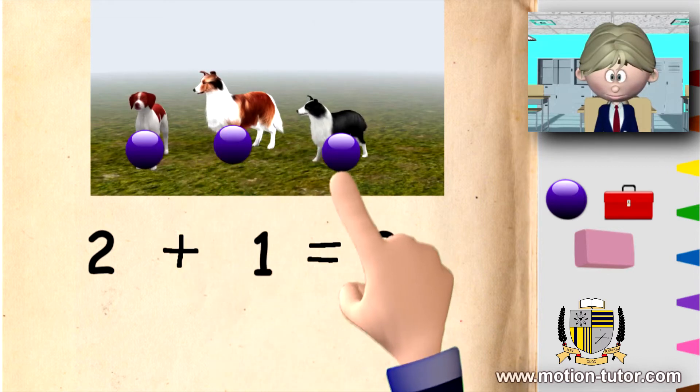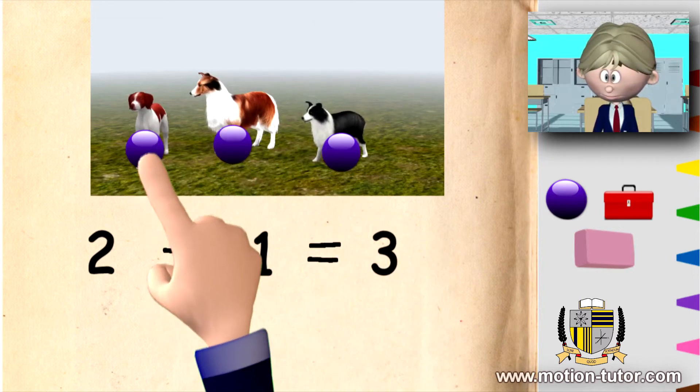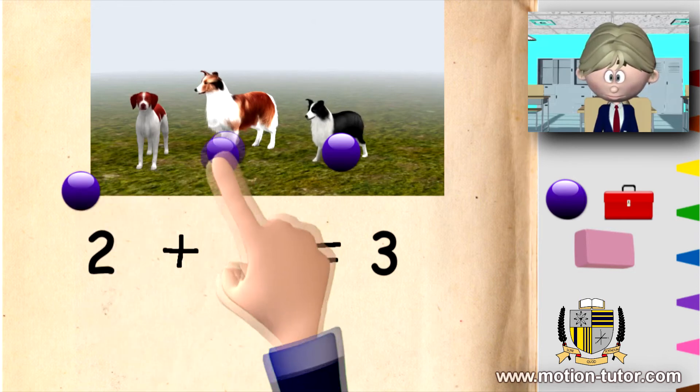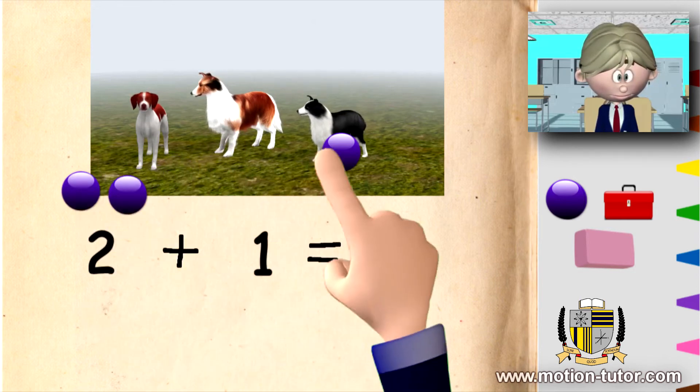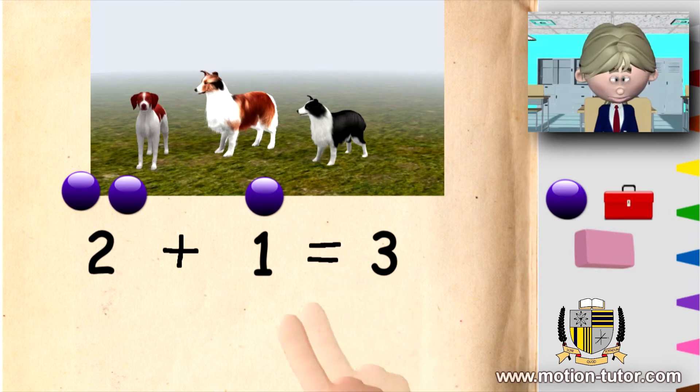One, two, three dogs. These two and this one, three. Two plus one is equal to three.